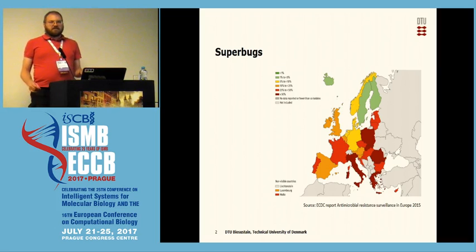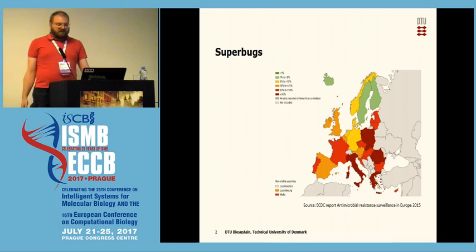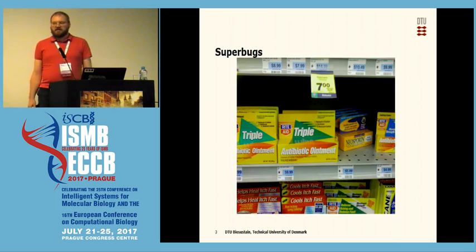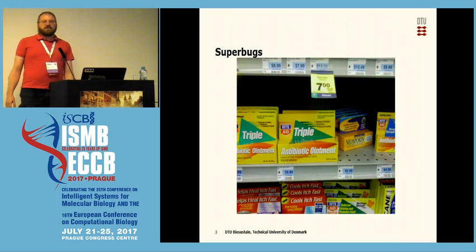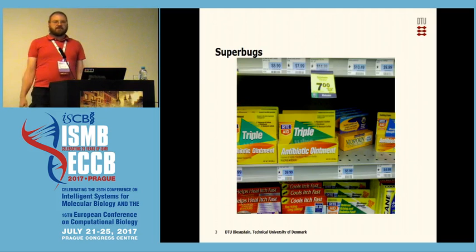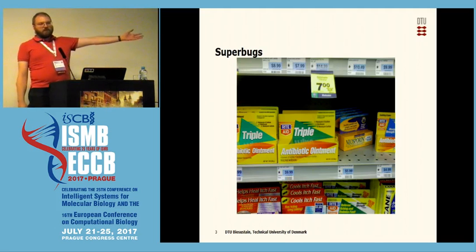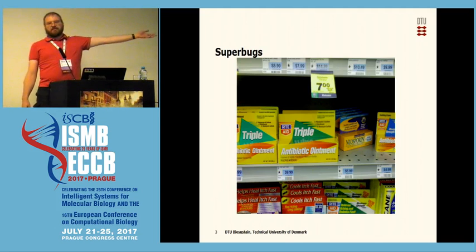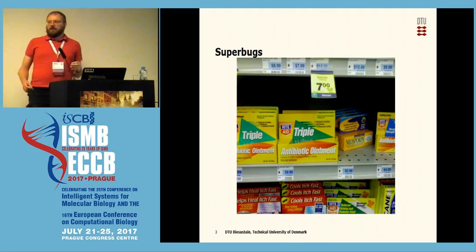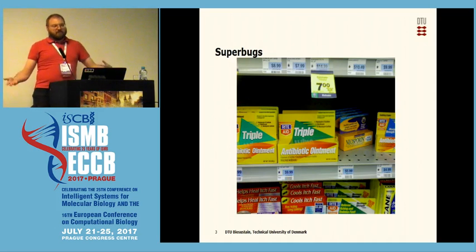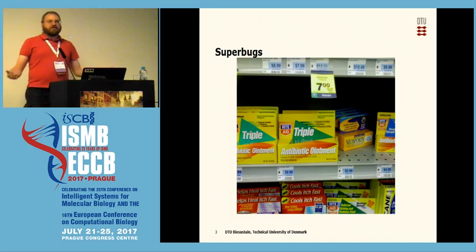The question of course is let's figure out the problem at the root. Why do we actually get superbugs? The reason is that we plainly misuse antibiotics. This is a picture I took in a Walmart a couple of years ago — you can basically go in and just buy antibiotics right off the shelf. And because simple antibiotics don't work anymore, you get a wound paste that has triple antibiotics in it with the hope that at least one of these still works. Obviously now you get bugs that have resistance against all three antibiotics in the end.